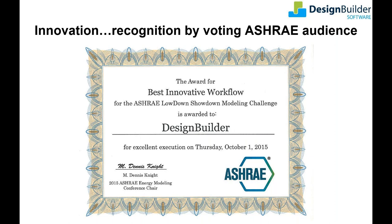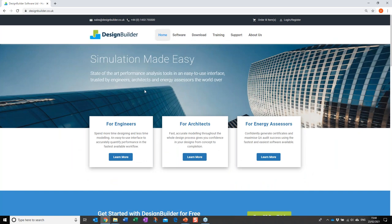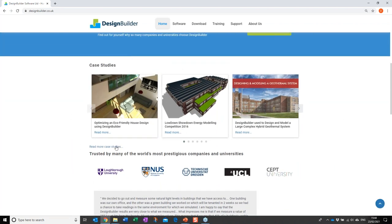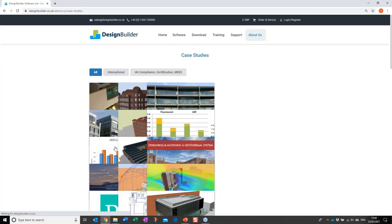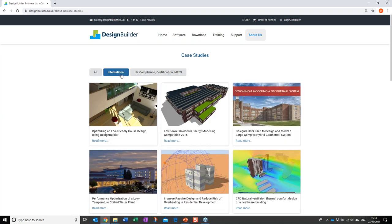That covers the key concepts of optimization, including Nishesh's project illustrating how optimization can be used in a real-world context to deliver a step change in building performance. If you want to find out more about Design Builder and our optimization tools, there are a range of free resources available on our website, and I'll take you through a few of those now. Going to the Design Builder homepage and scrolling down towards the bottom, you can see there's a section on case studies accessible directly from the homepage.